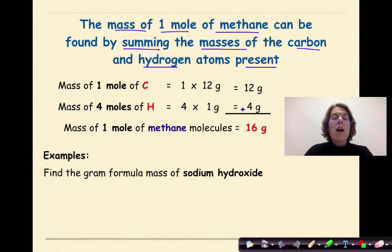The mass of one mole of methane can be found by summing the masses of the carbon and the hydrogen atoms present. So the mass of one mole of carbon times the atomic mass of carbon, which is 12, equals 12. The mass of four moles of hydrogen, you have four hydrogens times the atomic mass, which is one gram. Four times one gives me four. Twelve plus four gives me 16. So the mass of one mole of methane molecules is equal to 16 grams.